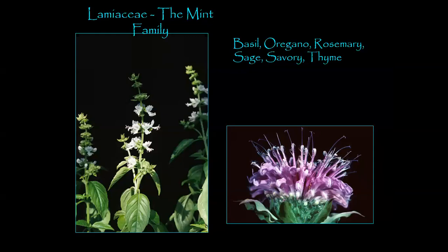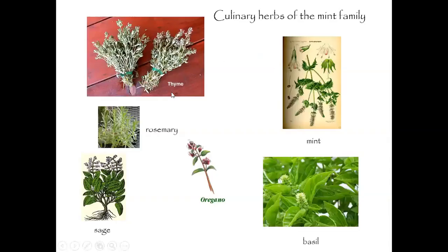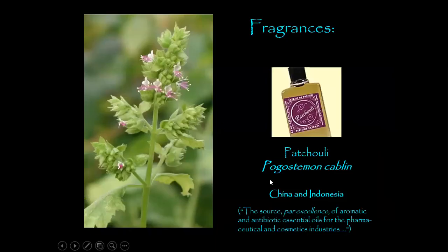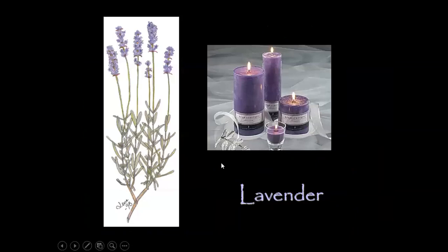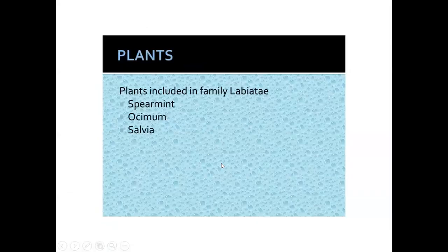Members are used for different culinary purposes: basil, oregano, rosemary, sage, savory, and thyme — these are called culinary herbs. Besides fragrance, Pogostemon cablin contains volatile constituents used for fragrance. Lavender also belongs to this family.